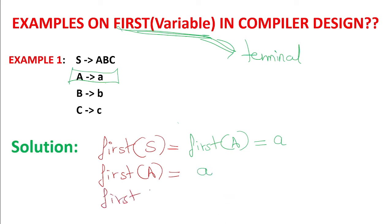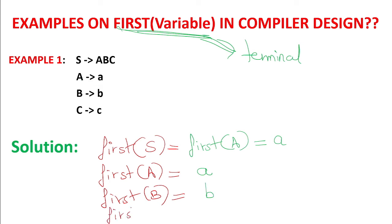Now we need to find FIRST of capital B. Check only the part of the grammar where B is on the left-hand side. Small b is the terminal at the first place in the B grammar, so FIRST of B is small b. Then for FIRST of C — checking where C is on the left-hand side — C produces small c, so FIRST of C is small c.